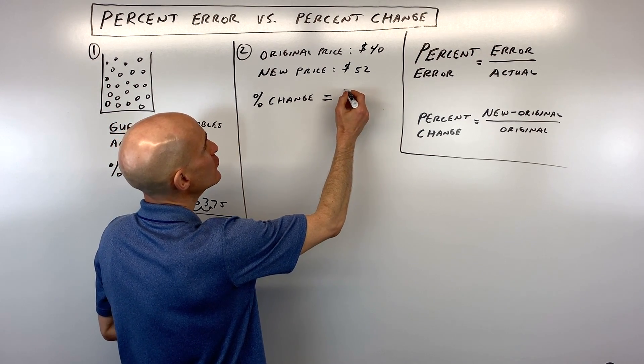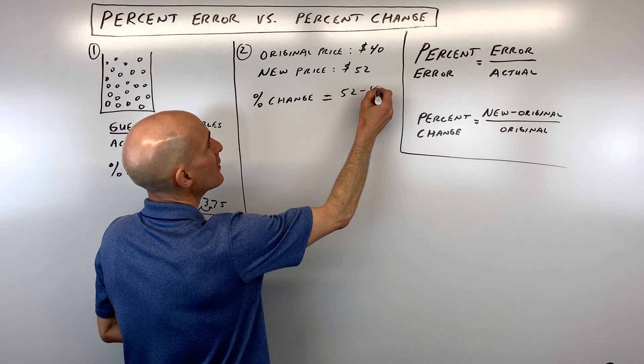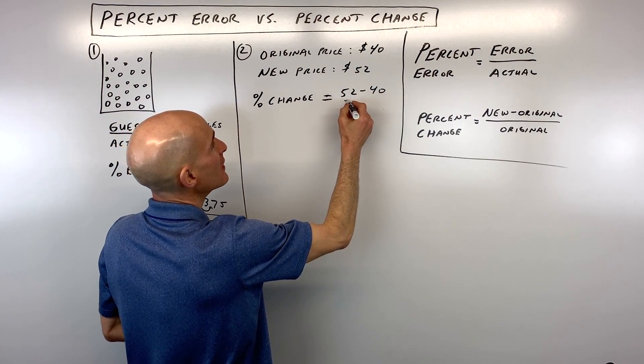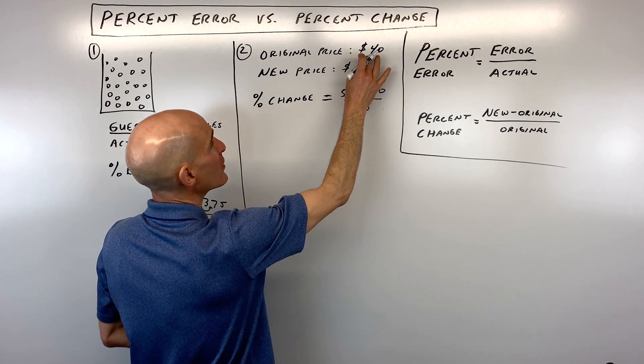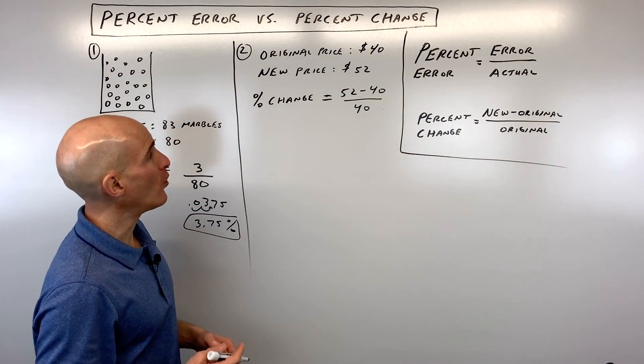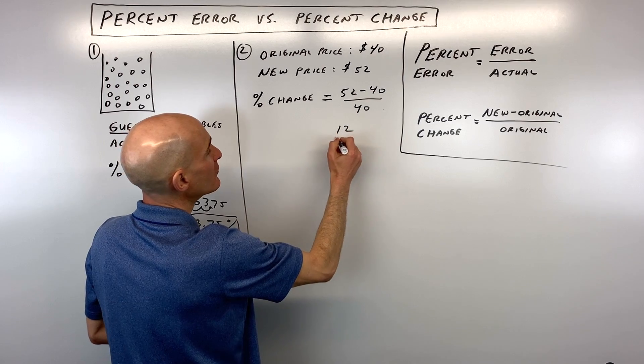So let's go ahead and do that. So the new price is $52 minus $40 divided by the original price, because we want to see how it changed compared to how it was. So this comes out to 12 divided by 40.